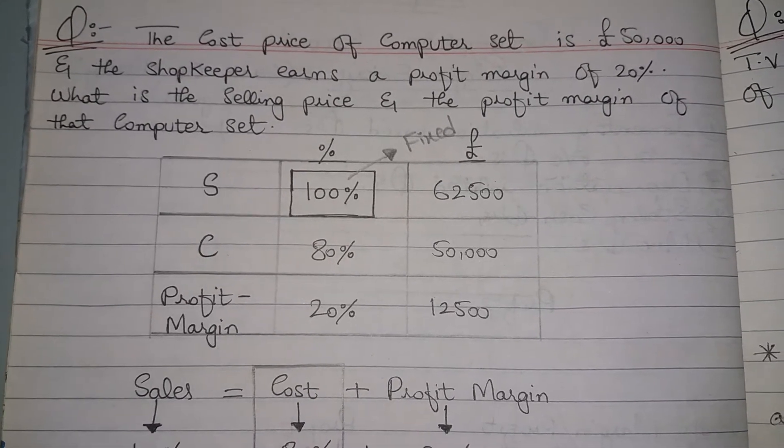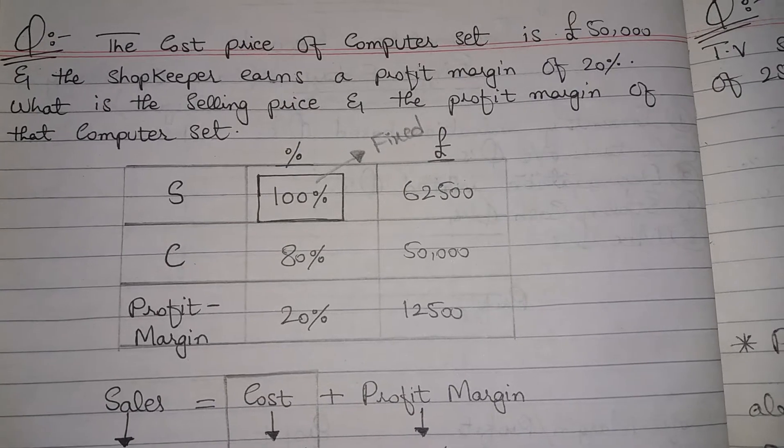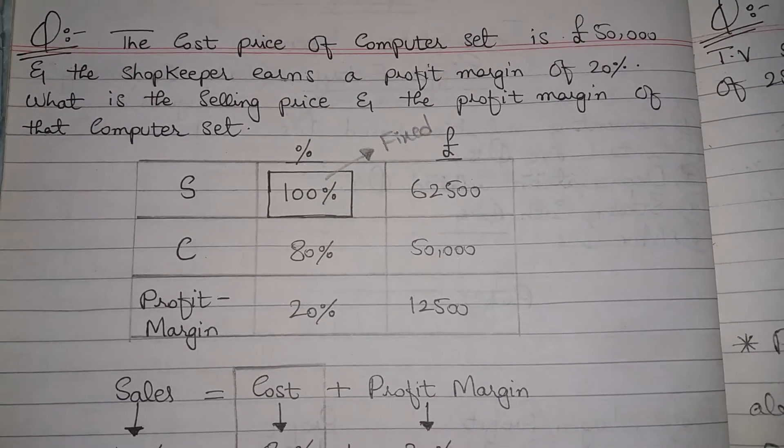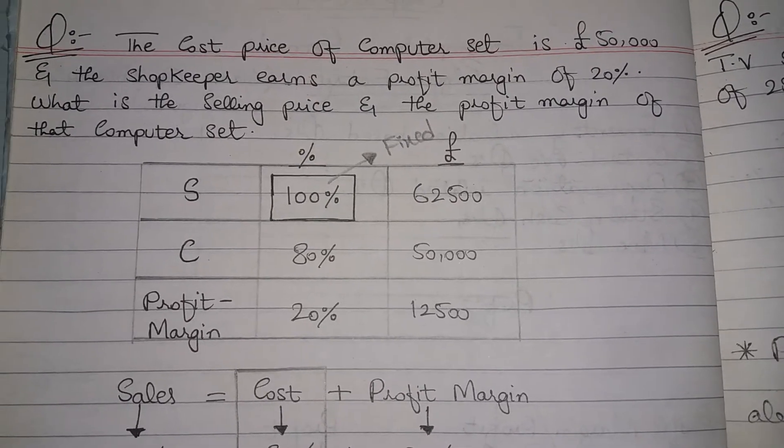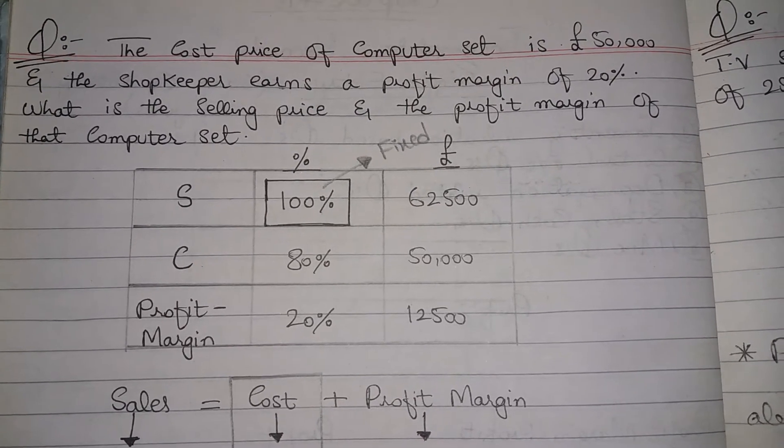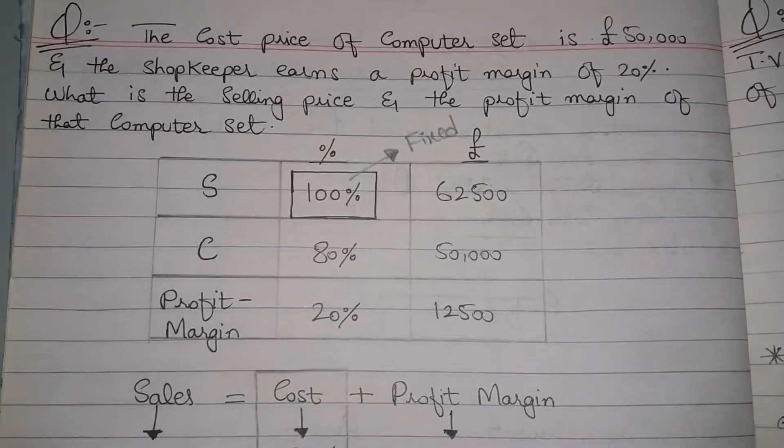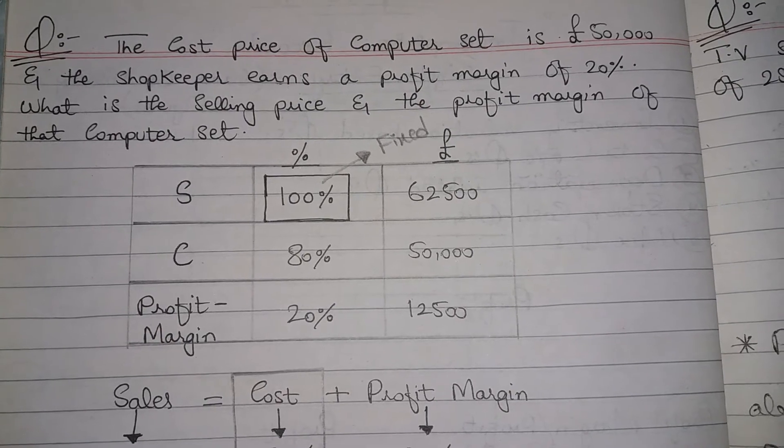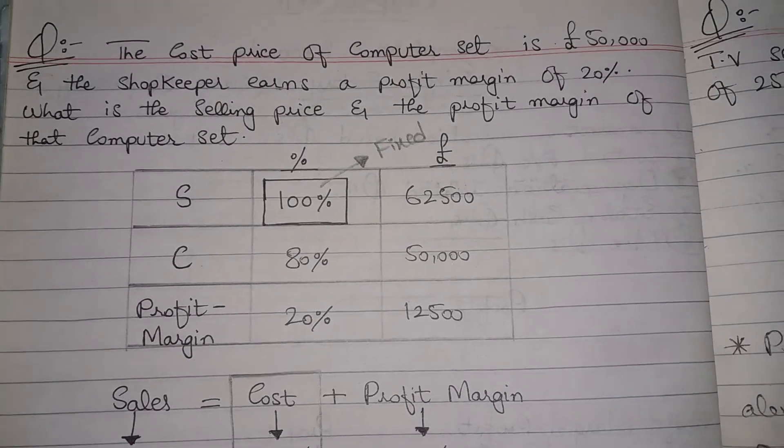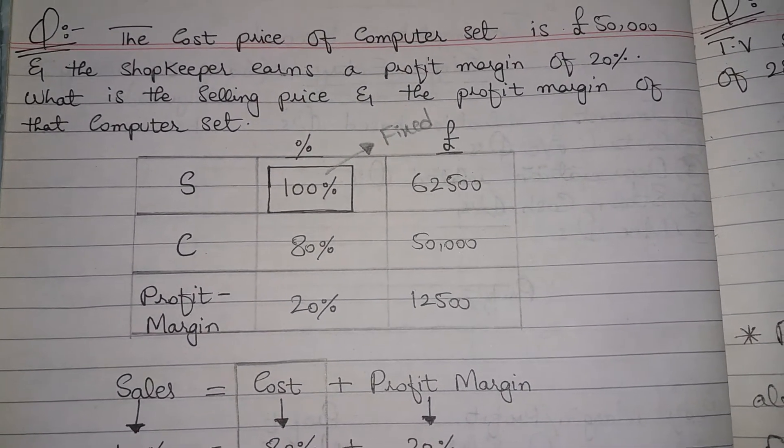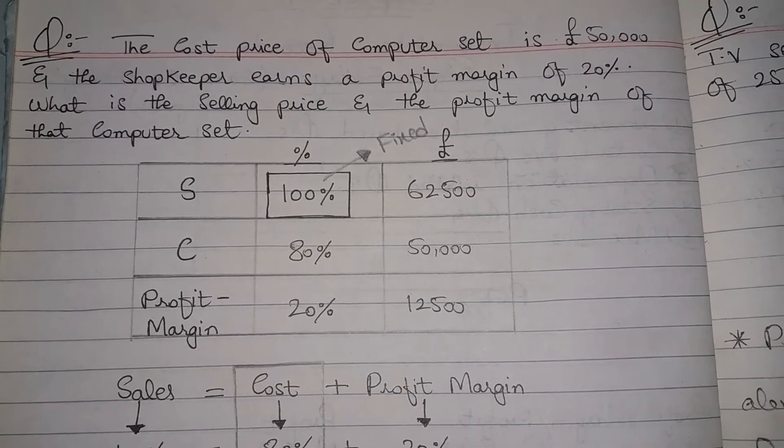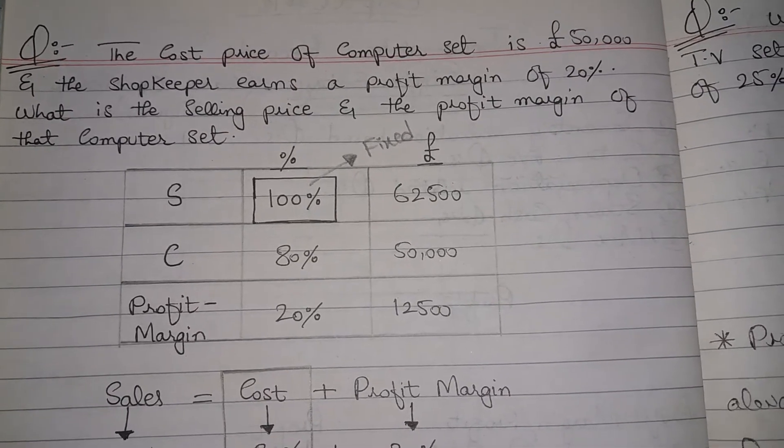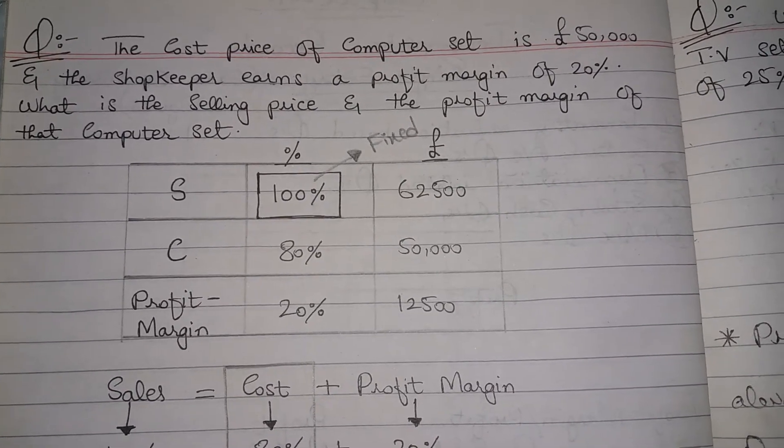In the question, we have only given cost which was 50,000, and the percentage of cost was 80% because profit was 20%. So when you deduct - as I said, selling price is 100% - when you deduct profit of 20% from 100%, you will get the percentage of cost.